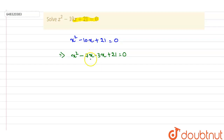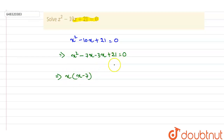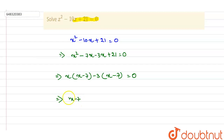Minus 7x minus 3x equals minus 10x, and minus 7 times minus 3 equals 21. So we get x squared minus 7x minus 3x plus 21 equals 0. Taking x common from the first pair: x(x minus 7), and minus 3 common from the second pair: minus 3(x minus 7). This gives (x minus 7)(x minus 3) equals 0.